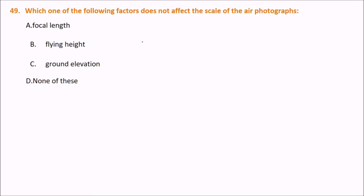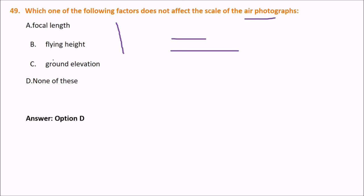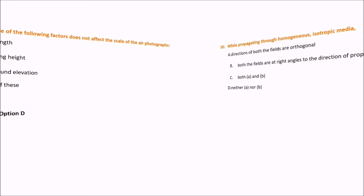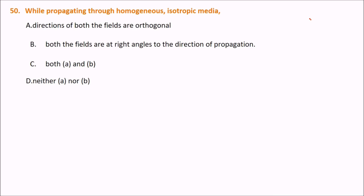Which one of the following factors does not affect the scale of the air photograph? The scale is the ratio of the actual length divided by the measurement in the photograph. While propagating through homogeneous isotropic media, directions of both the electric and magnetic fields are orthogonal, and both fields are at right angles to the direction of propagation — so both A and B are true.